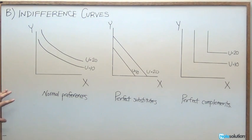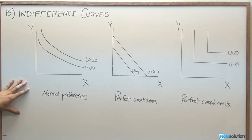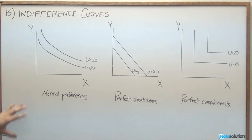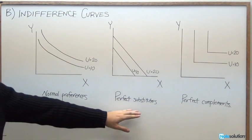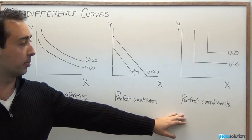Finally, we're going to look at two forms of indifference curves that take the assumptions we made about normal preferences and extend them to one extreme. We've now got perfect substitutes and perfect complements.